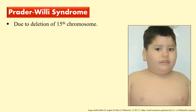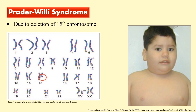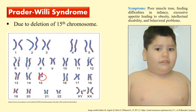The next autosomal disorder is Prader-Willi syndrome, and this is due to deletion of the fifteenth chromosome. In the karyotype you can clearly see there is a deletion in the fifteenth chromosome, highlighted under the red circle. The symptoms include poor muscle development, feeding difficulty in infancy, and excessive appetite leading to obesity.